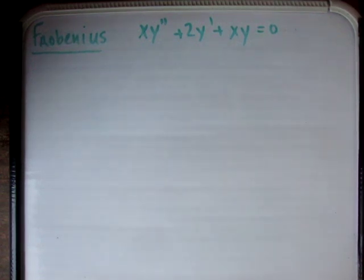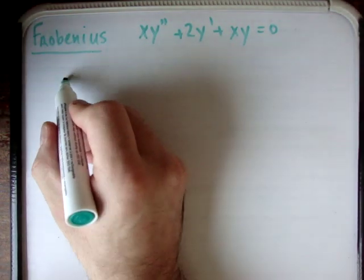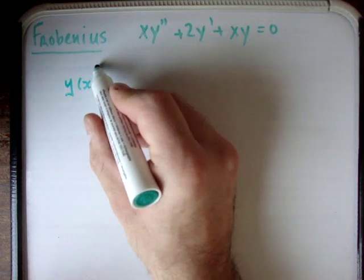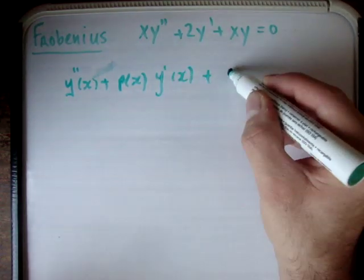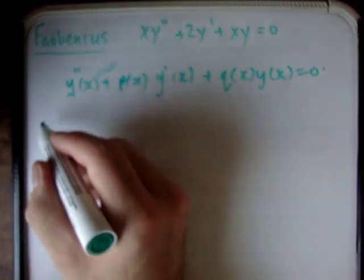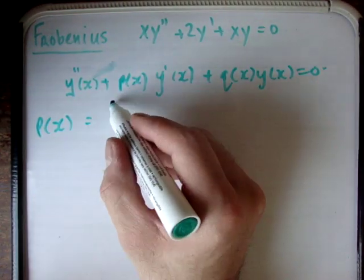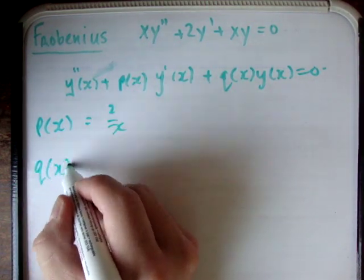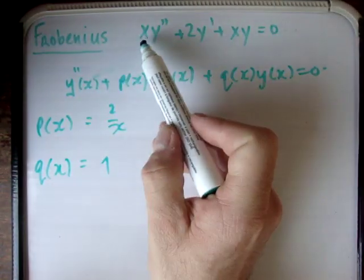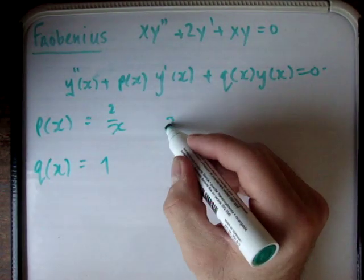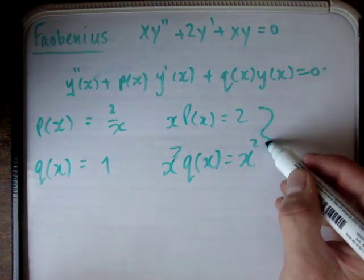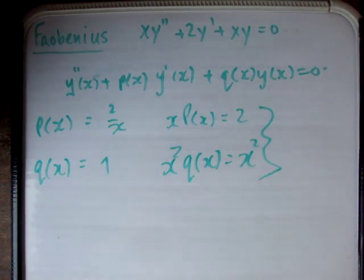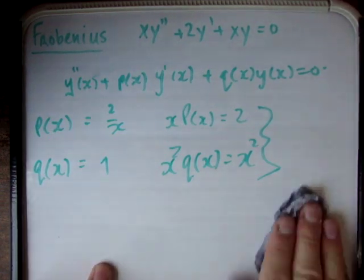The first thing we need to do is show that the method applies. We need to put the differential equation in the form y''(x) + p(x)y'(x) + q(x)y(x) = 0. If we do that, we find that p(x) becomes 2/x and q(x) = 1 — that's just dividing by x everywhere. Then x·p(x) = 2 and x²·q(x) = x². The method of Frobenius applies where you have singularities, and a singularity is a divide-by-zero situation, so the method applies here.